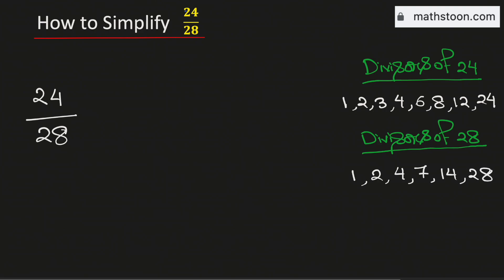Among these divisors, see that 4 is the greatest one which is common in both these two lists. Therefore, 4 is the greatest common divisor of 24 and 28.